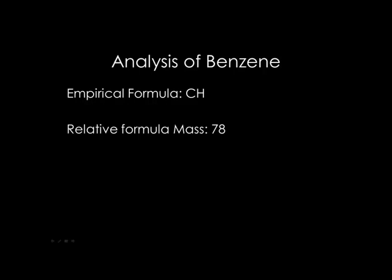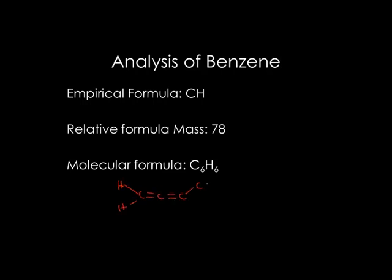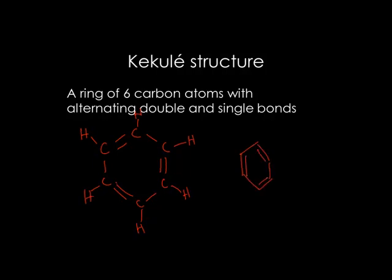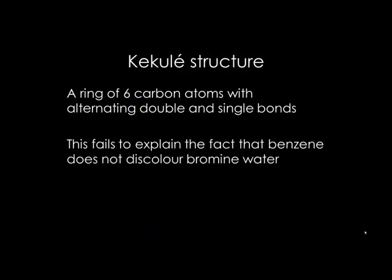The molecular formula suggests that there must be many double bonds in the structure, and so one of the proposed structures was proposed. However, further research showed that benzene is quite unreactive, which showed that this structure cannot be true. A German chemist, Kekulé, suggested that the structure of benzene was a ring of six carbon atoms with alternating double and single bonds. However, this still does not explain why benzene does not react with bromine water and other things like alkenes should.